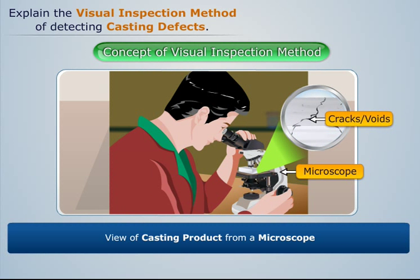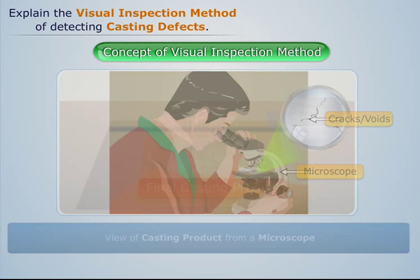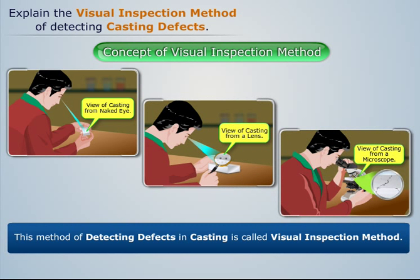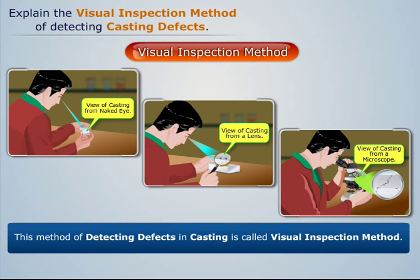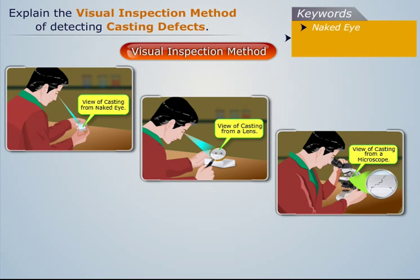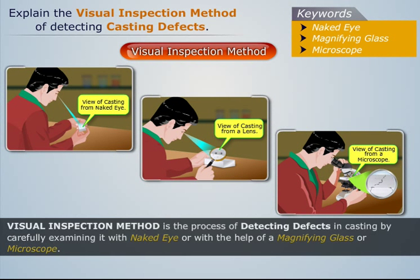This method of detecting defects in casting is called the visual inspection method. Thus, the visual inspection method is the process of detecting defects in casting by carefully examining it with the naked eye or with the help of a magnifying glass or microscope.